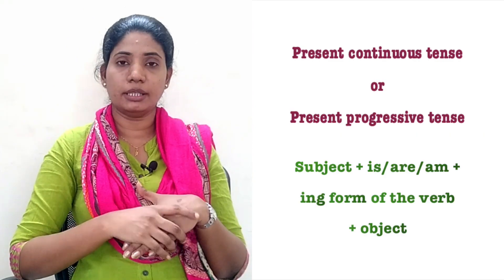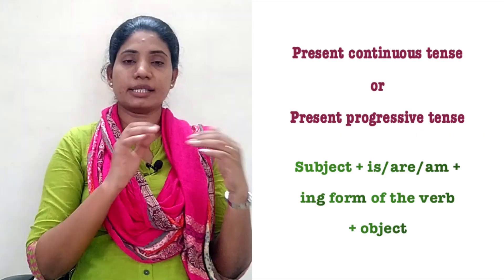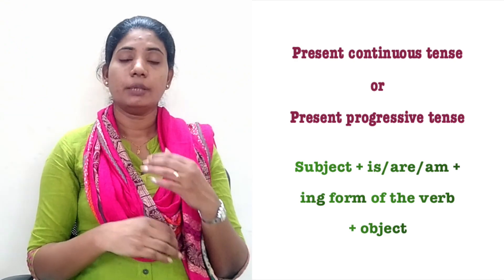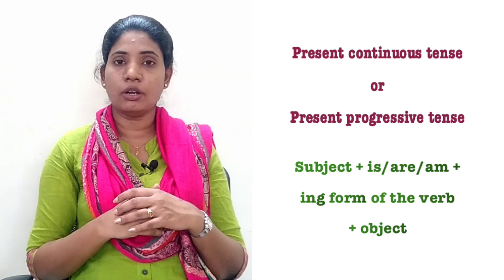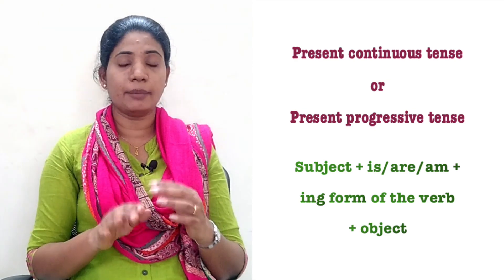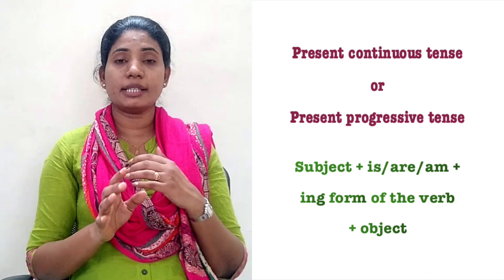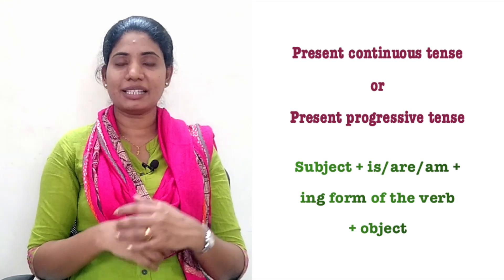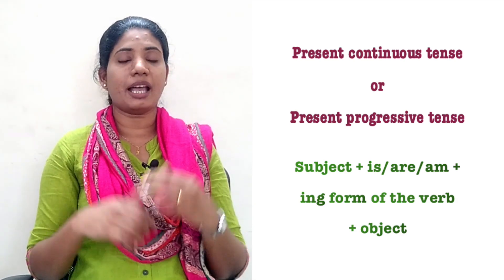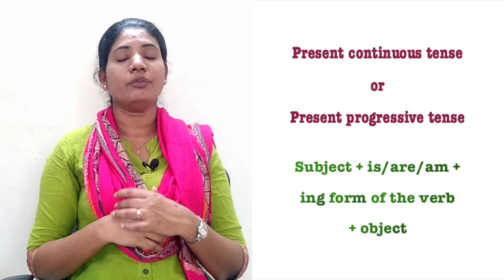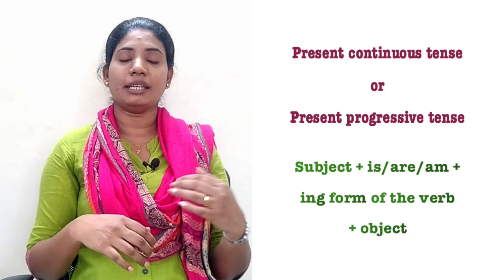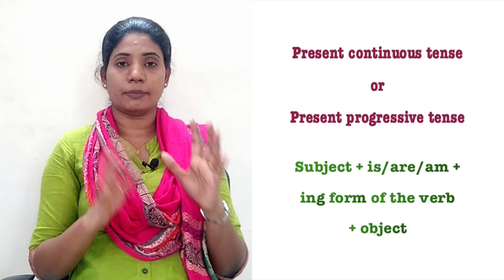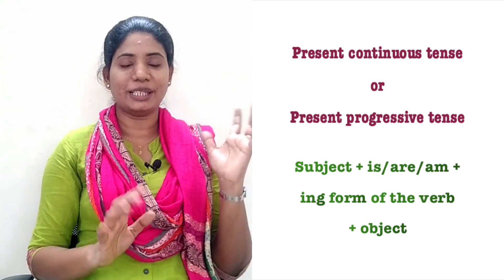Here we have a few exercises. Use the Present Continuous Tense in the ING form of the verb. Remember the formula: subject plus is, are, or am, plus ING form of the verb. Use this formula to complete the exercises.